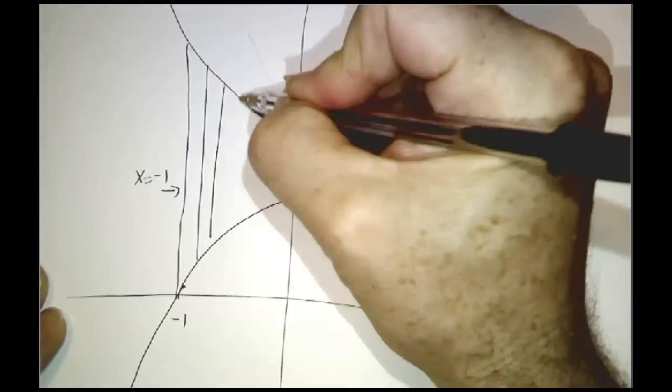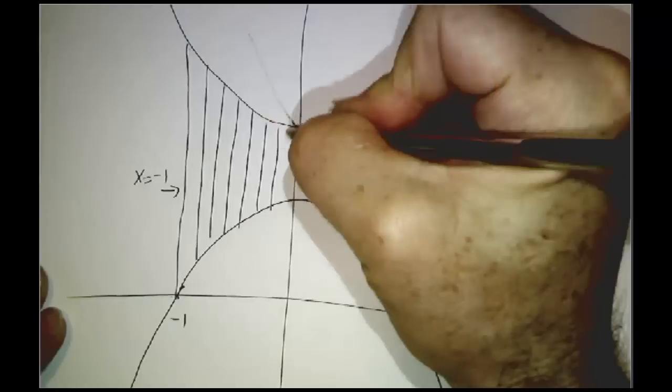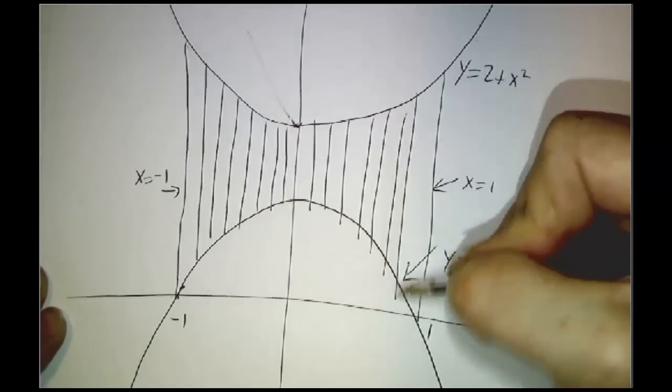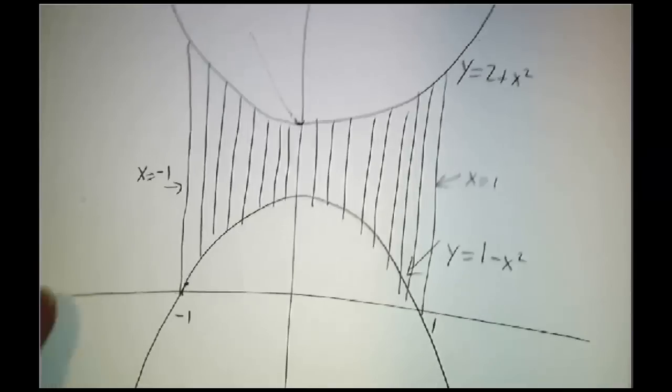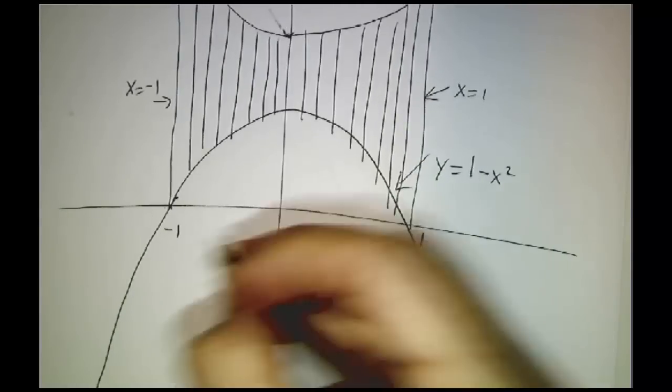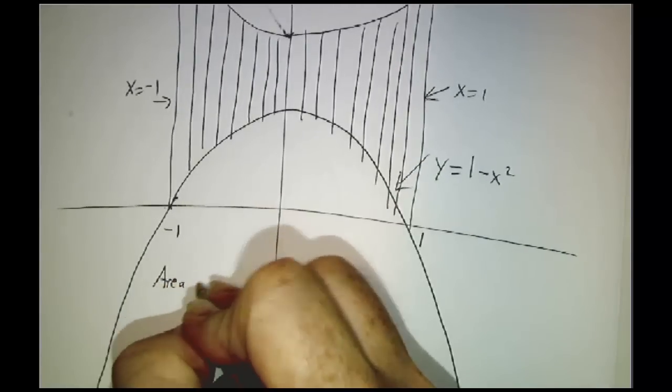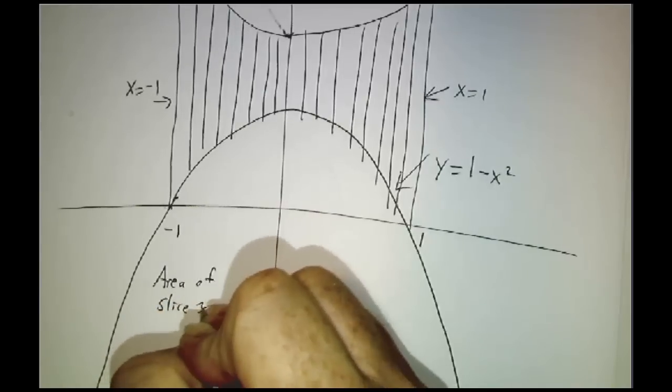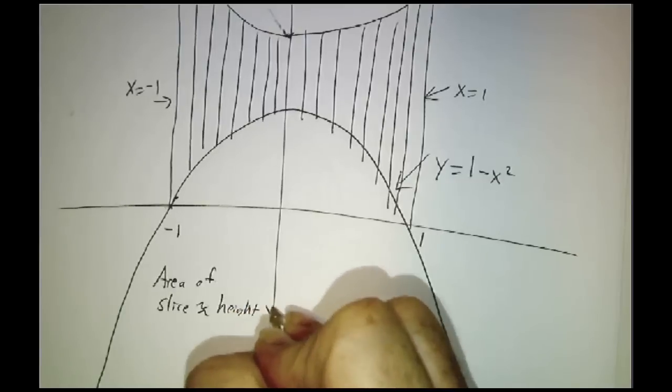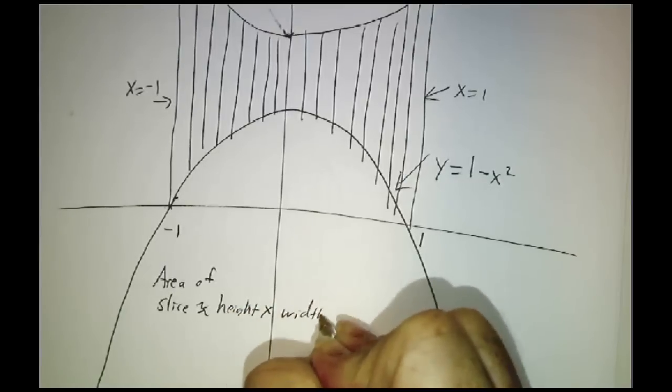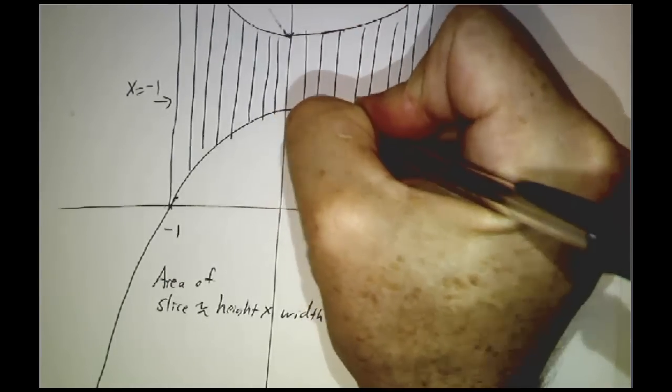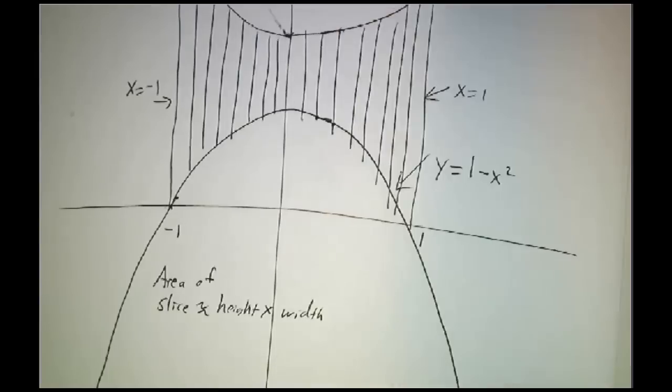We slice it. We break our region up into manageable slices, and then we say, what's the area of each slice? Well, the area of each slice is roughly its height times its width. And I say roughly because each of these slices is almost a rectangle, but not quite. This height is not the same as this. This height is not the same as this. It's an approximate rectangle.